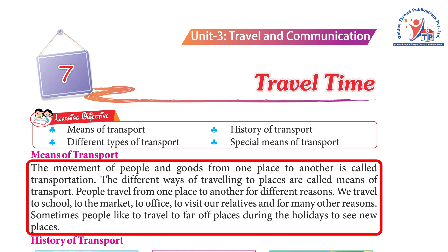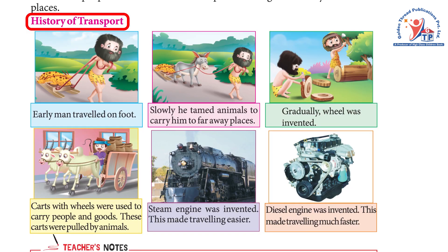The different ways of traveling to places are called means of transport. People travel from one place to another for different reasons — we travel to school, to the market, to the office, to visit relatives, and for many other reasons. Sometimes people like to travel to far-off places during the holidays to see new places.